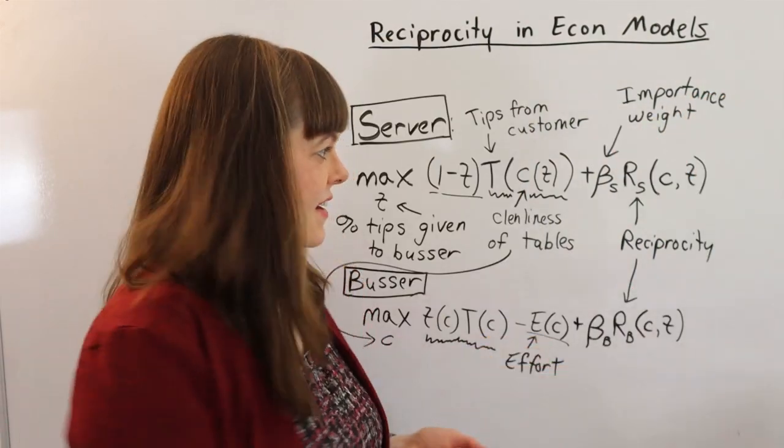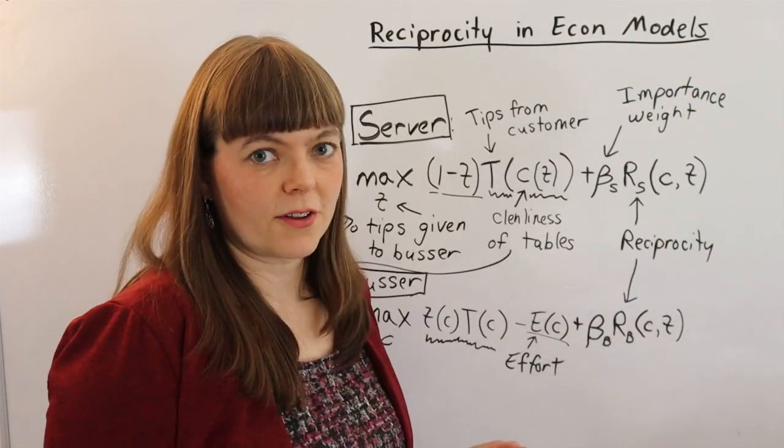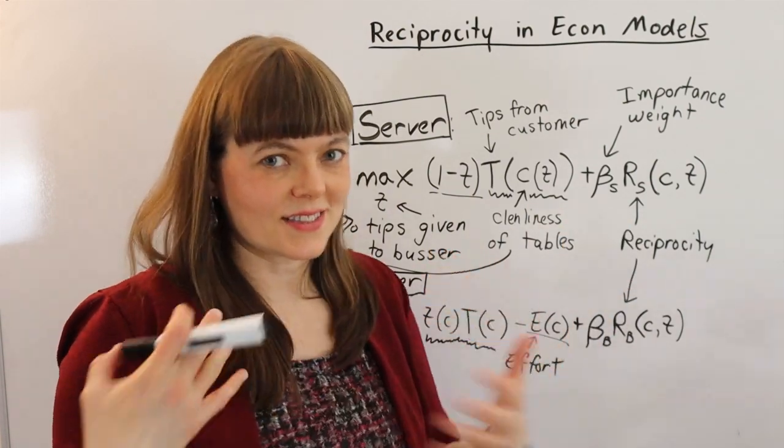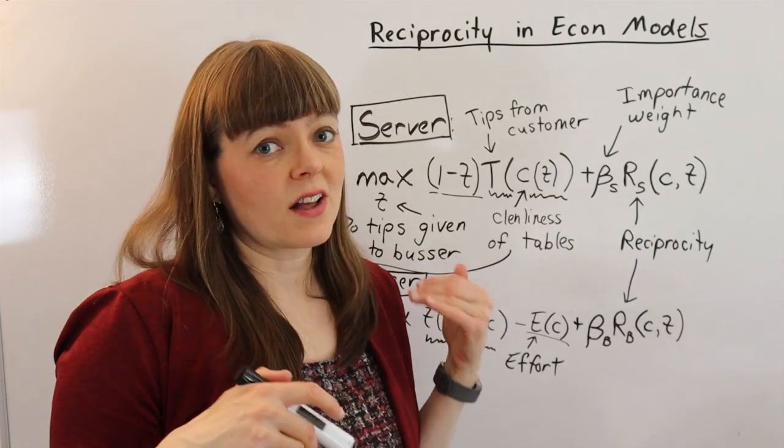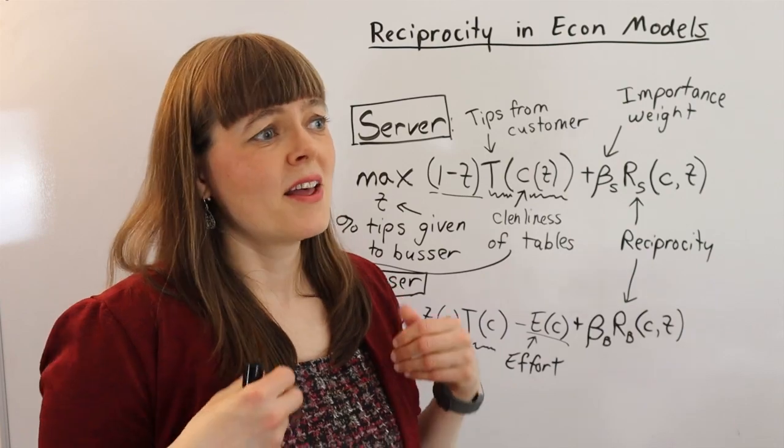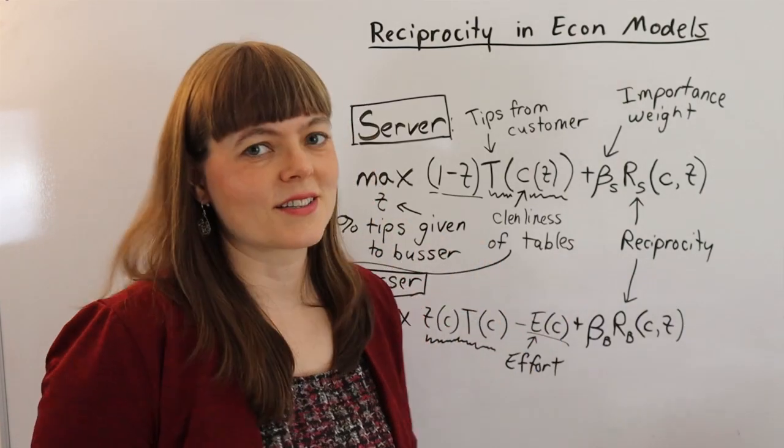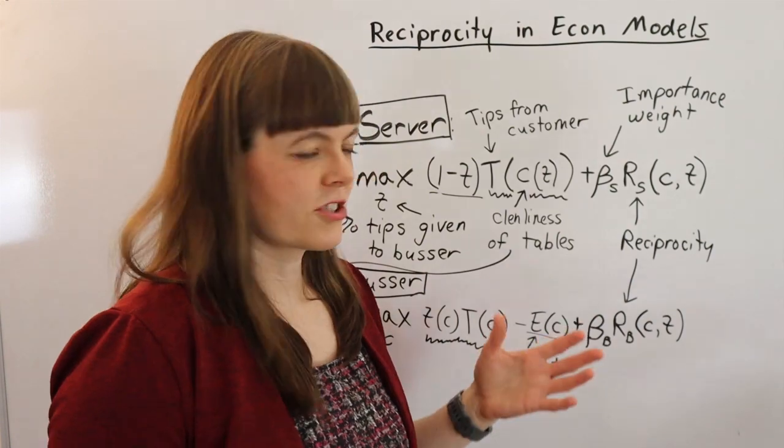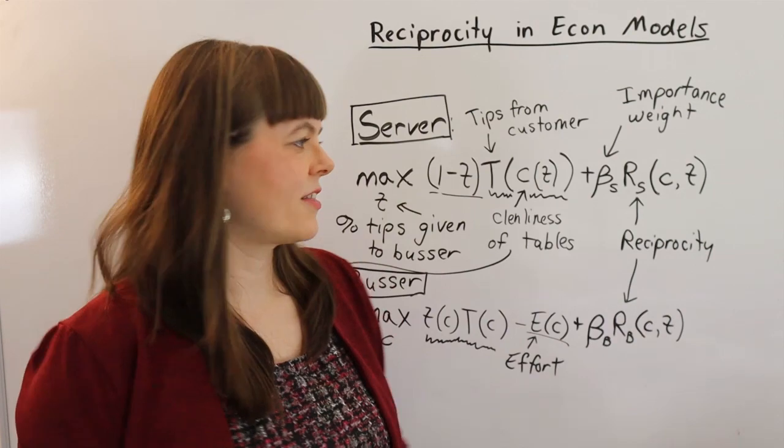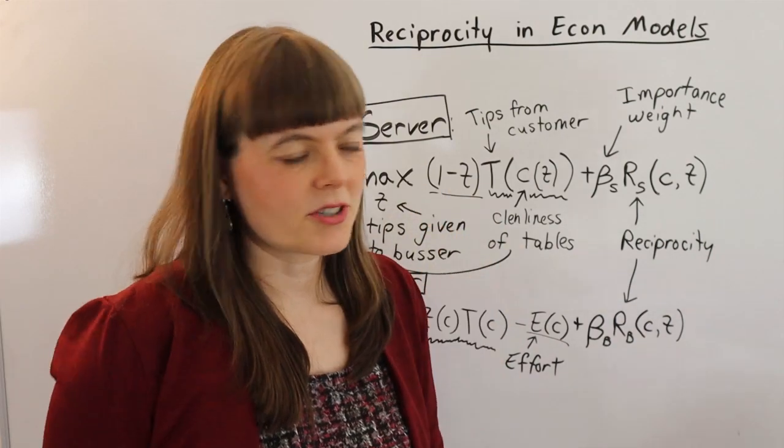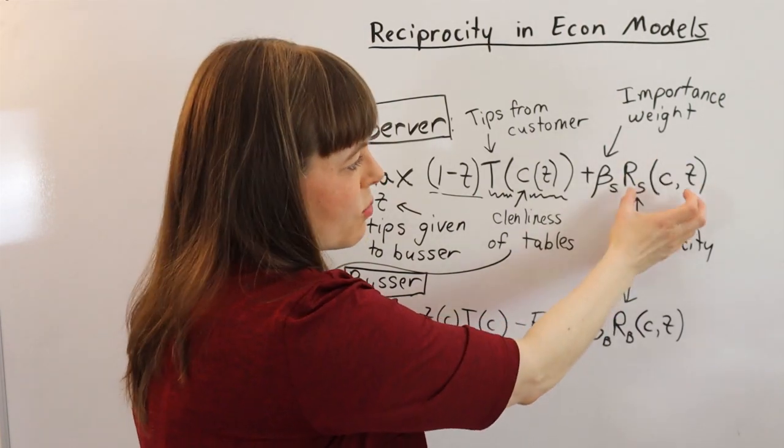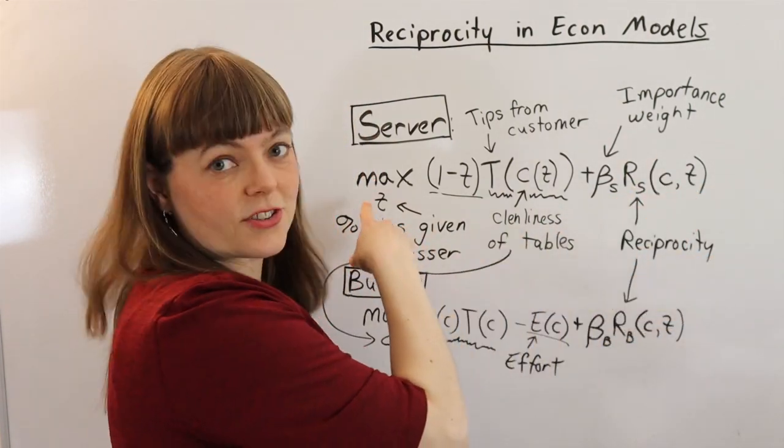I've just added a reciprocity term into the model. And I added an importance weight because we know some people are very sensitive and they're going to feel a lot of reciprocity compulsions. If someone's nice to them, they're going to feel like they really owe it to that person to be nice to them and vice versa. And other people are just not that sensitive to others, they don't really think about it. They're more thinking about the money. It's just a personality thing. So I'm allowing the importance weight to capture how heavily weighted is this term in the server's model.